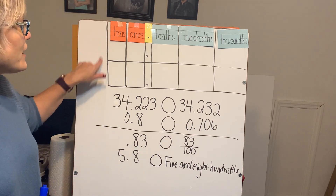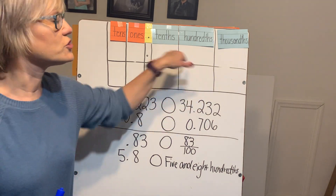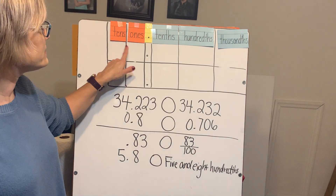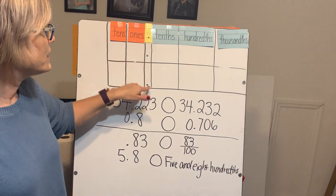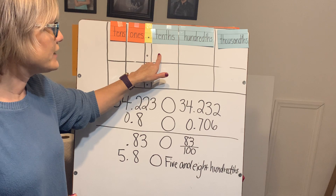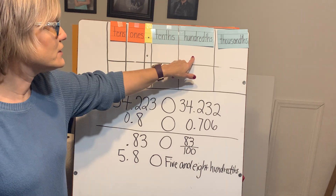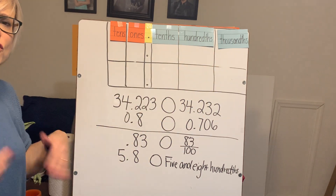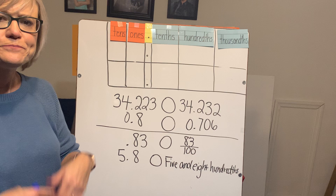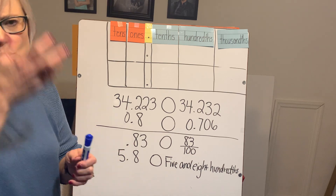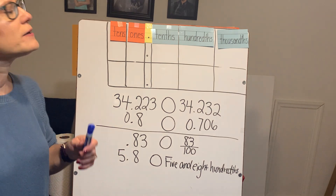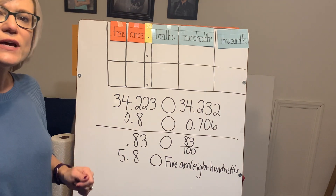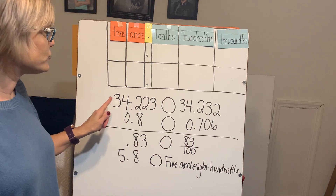One thing you'll notice is we have a place value chart here. In my place value chart I have the tens, ones, then my decimal, tenths, hundredths, and thousandths. You're going to see that in our work in class this week. So let's go ahead and get started — we need to read the numbers first.